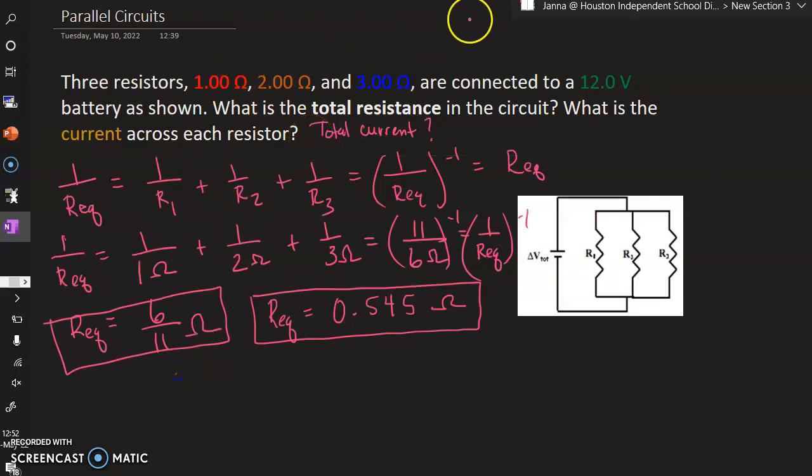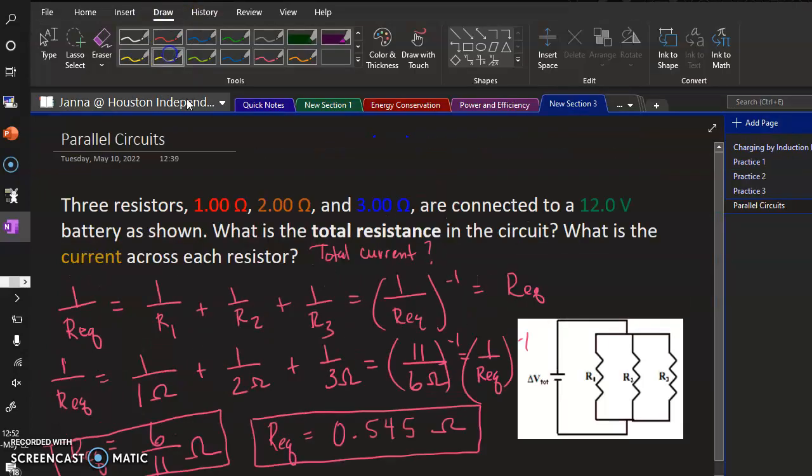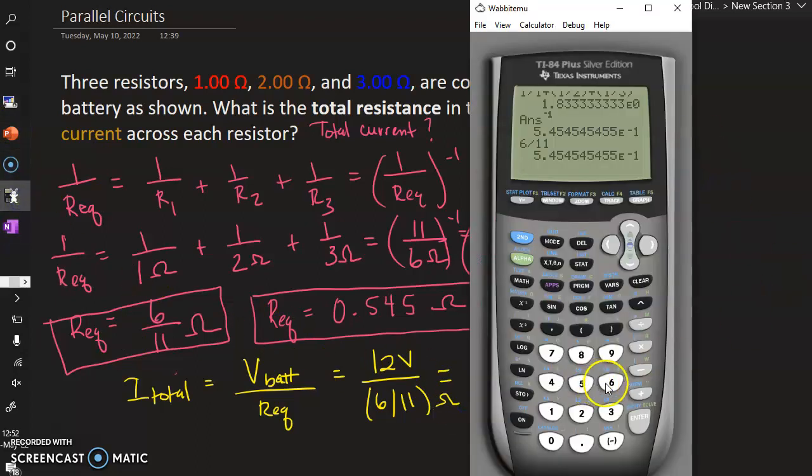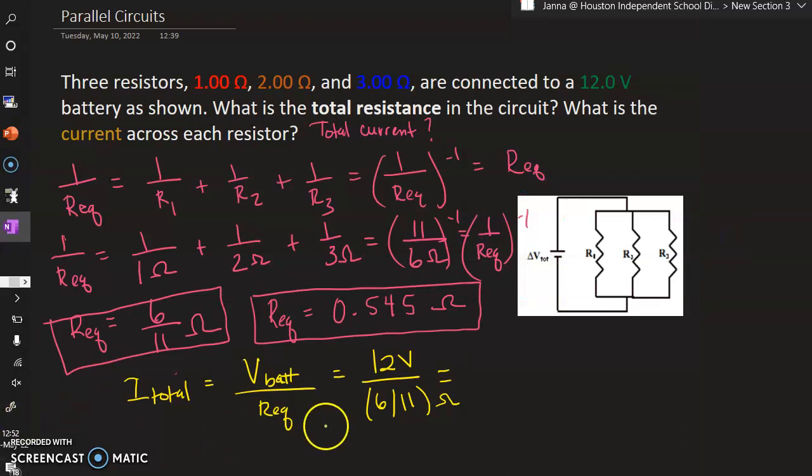Remember I total. Oh, I'm going to change colors for this. Do yellow here. Okay. I total will equal the voltage of the battery divided by the equivalent resistance. This is going to be 12 volts divided by 6 over 11 ohms. If I grab the Wabbit calculator, I can do 12 divided by, use your parentheses if you're not going to use the fraction tool, 6 over 11, enter, and this is 22, 2.2 E1. That is 22 amps of total current in the circuit.